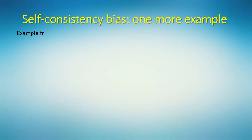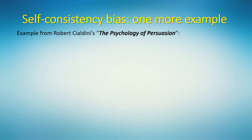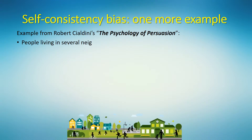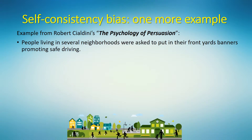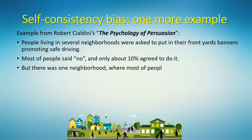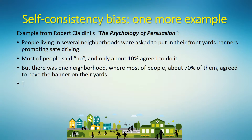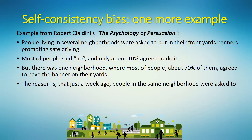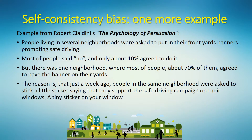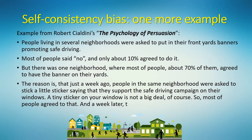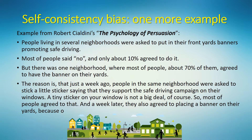Another example comes from Robert Cialdini's book, The Psychology of Persuasion. The author explains how the need for consistency can be used as a persuasion technique. In his example, based on real events, people in several neighborhoods were asked to put banners promoting safe driving in their front yards. Most people said no — only about 10% agreed. But in one neighborhood, about 70% agreed to have the banner. The reason is that just a week earlier, those same people were asked to stick a small sticker supporting the safe driving campaign on their windows. A tiny sticker is not a big deal, so most people agreed. And a week later, they also agreed to the banner, because of a need for consistency in behaviors and opinions.